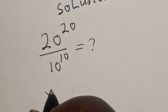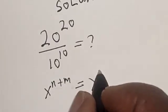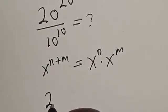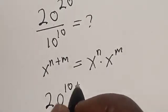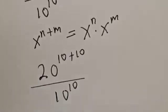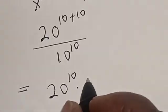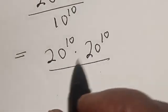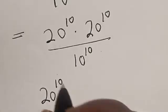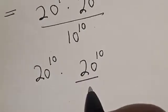Note that s raised to power (n + m) is equal to s raised to power n multiplied by s raised to power m. So 20 raised to power (10 + 10) divided by 10 raised to power 10 is equal to 20 raised to power 10 multiplied by 20 raised to power 10, divided by 10 raised to power 10.